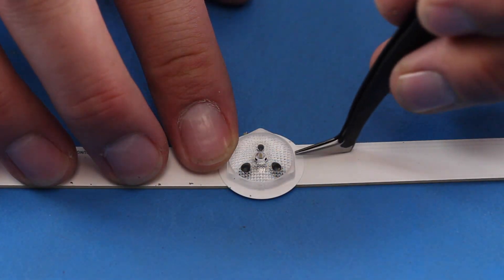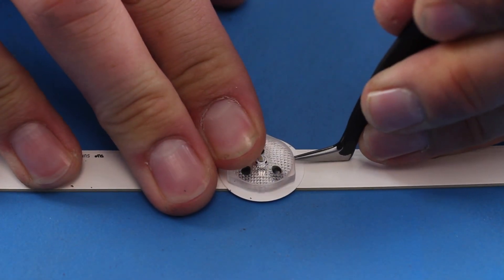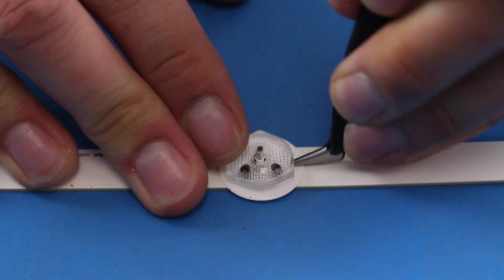I will use my tweezers to get underneath the diffusing lens and pop it free from the LED strip.